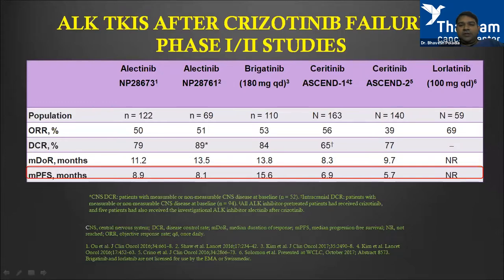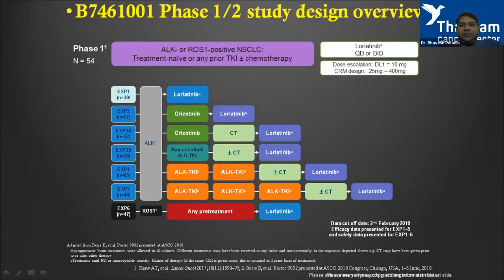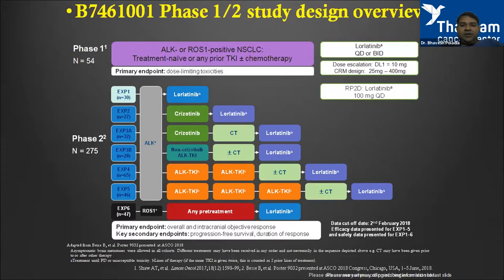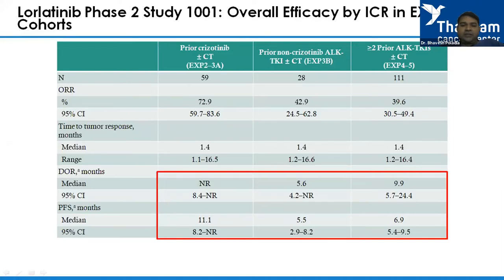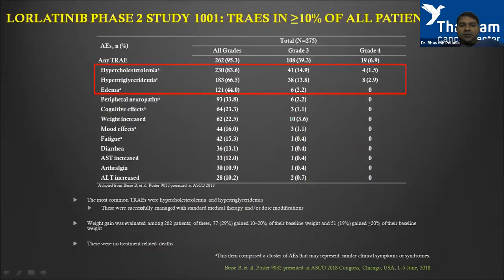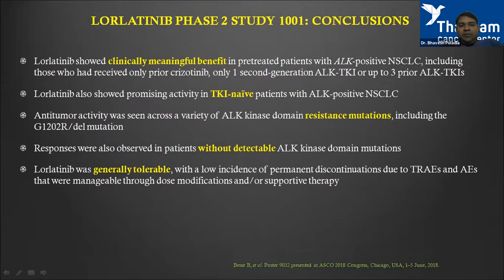Lorlatinib is a newer agent in this setting. In the second line, alectinib achieves around eight to nine months PFS, ceritinib five to seven months, and brigatinib looks very promising at almost 16 months. Lorlatinib's endpoint has not yet been reached. It was studied in a well-designed phase 1/2 study with multiple cohorts covering naive, first-line, second-line, and third-line patients. It showed clinically meaningful benefit in patients who received prior crizotinib and second-generation TKIs, as well as in TKI-naive patients.